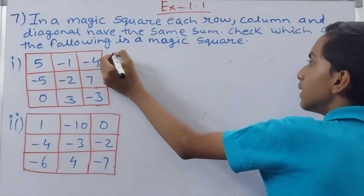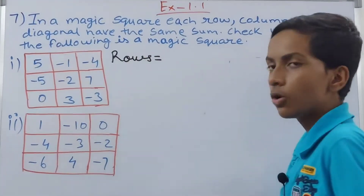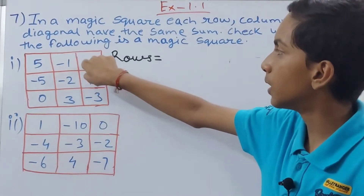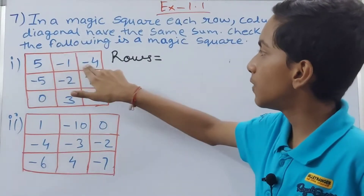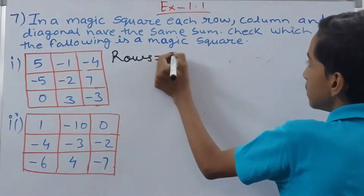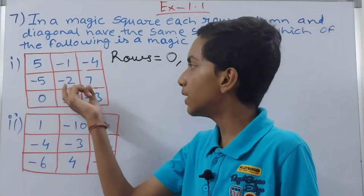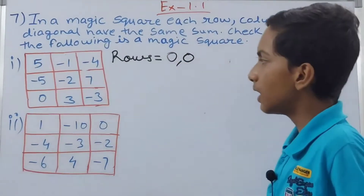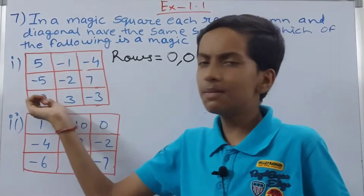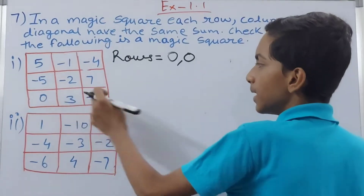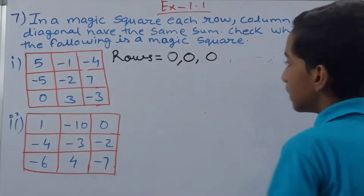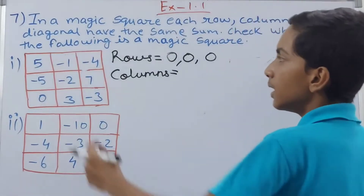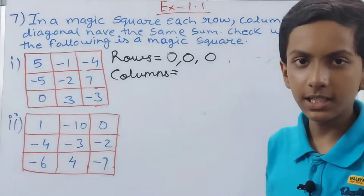Now let's solve the first square. First we add the rows, which go horizontally. First row: 5, minus 1, and minus 4. Minus 1 and minus 4 is minus 5, and 5 minus 5 is zero. Second row: minus 5 and minus 2 gives minus 7, and minus 7 plus 7 is zero. Third row: 0 plus 3 minus 3 — the zero has no value, and 3 minus 3 is zero. All three rows sum to zero.